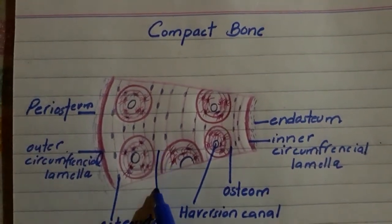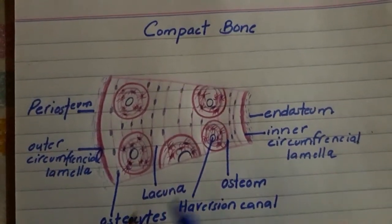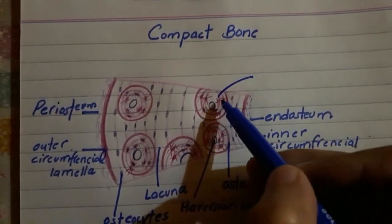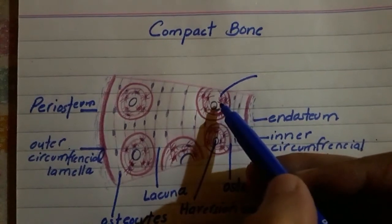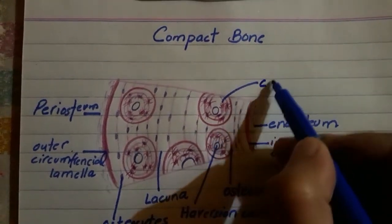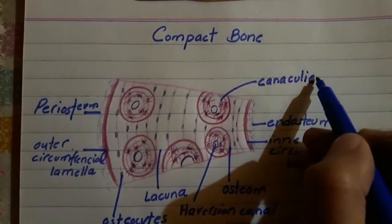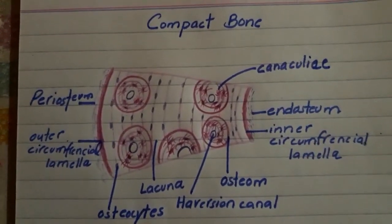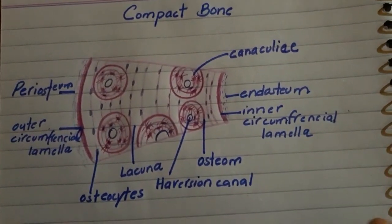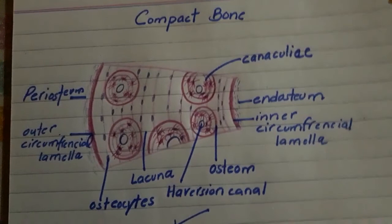The labeling continues with endosteum and inner circumferential lamella. The lacuna and canaliculi are also labeled. And this will be our compact bone diagram with the description and labeling everything.